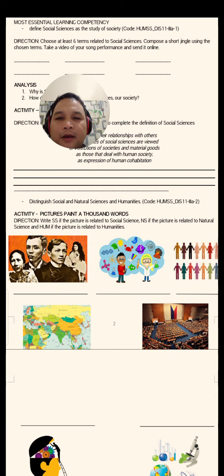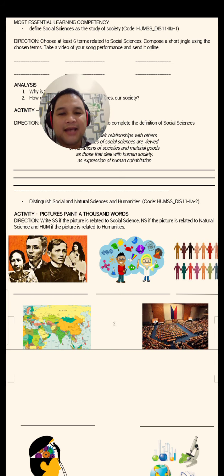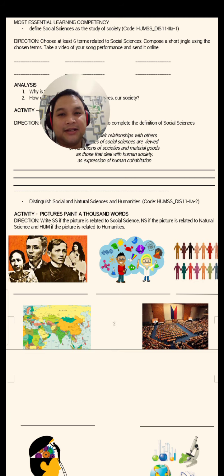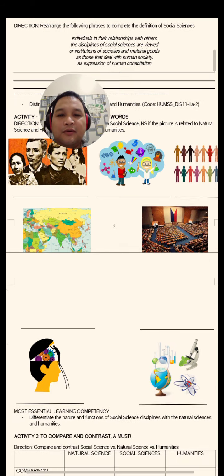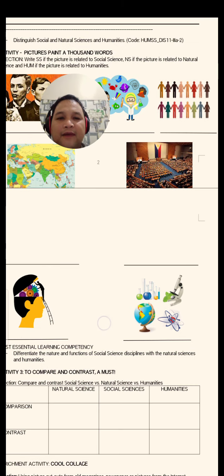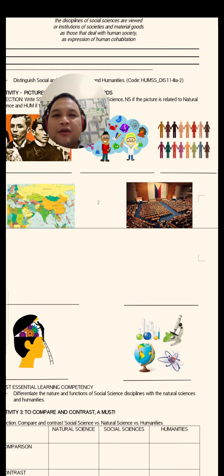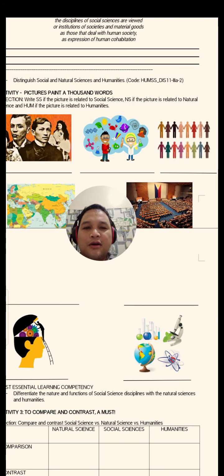For this activity, titled 'Pictures Paint a Thousand Words,' you're going to write SS if the picture you see is related to social science, NS if the picture is related to natural science, and HUM if the picture is related to humanities. We have seven pictures for you to identify — whether they are social science, natural science, or humanities.